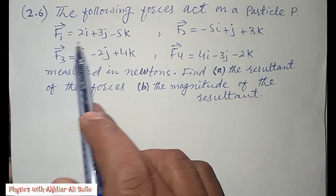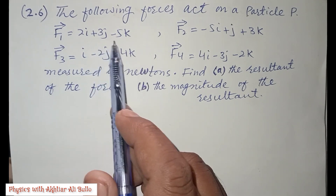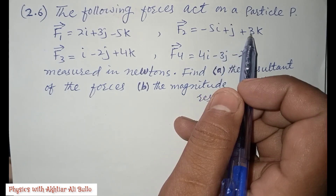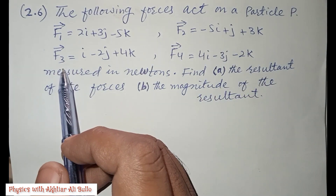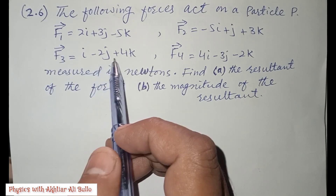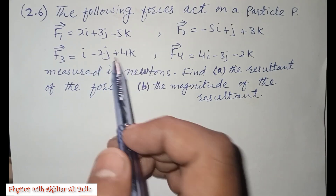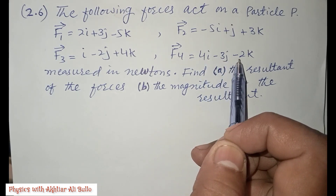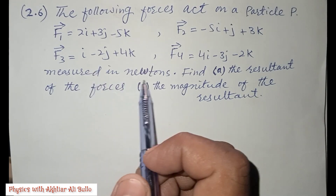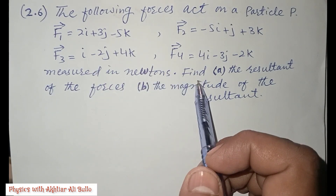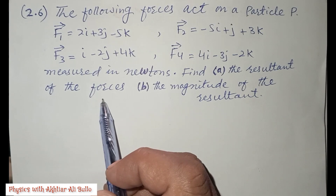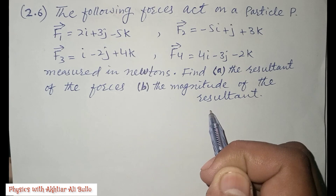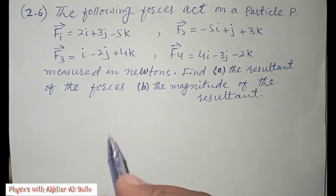F1 is equal to 2i + 3j − 5k, F2 is equal to −5i + j + 3k, F3 is equal to i − 2j + 4k, and F4 is equal to 4i − 3j − 2k, measured in Newtons. Find: (a) the resultant of the forces, and (b) the magnitude of the resultant.